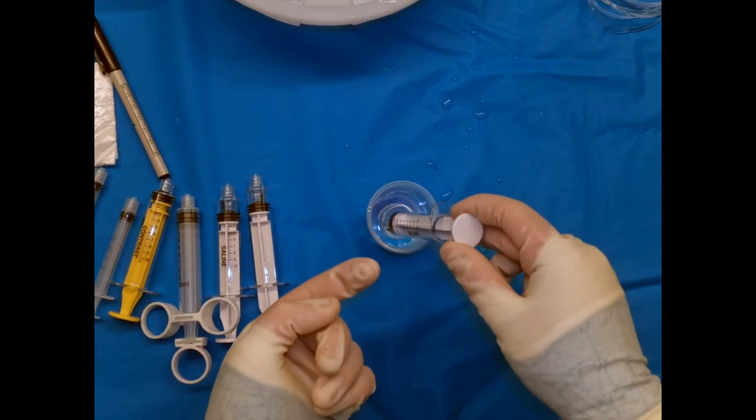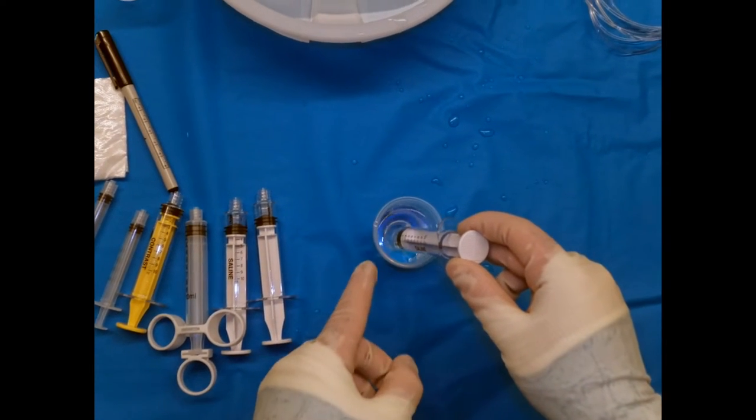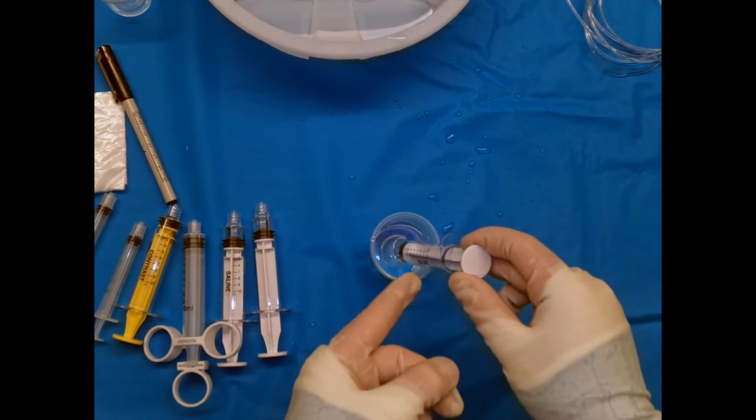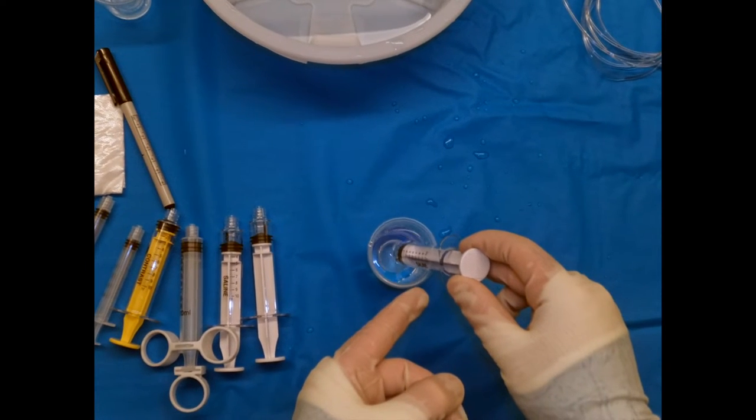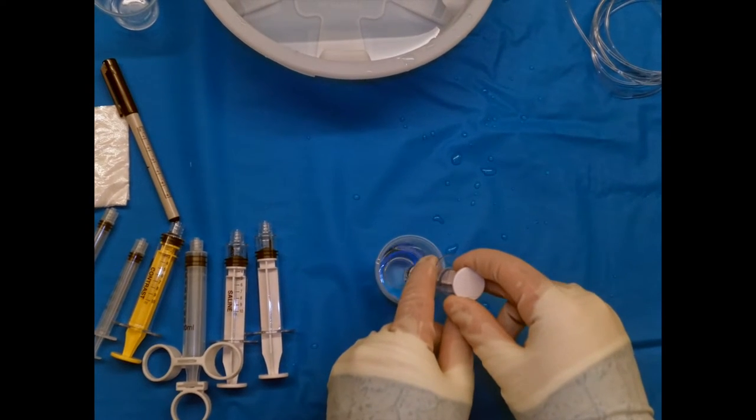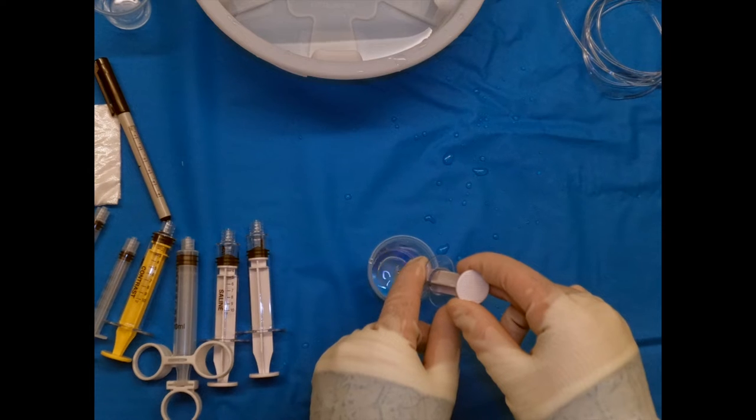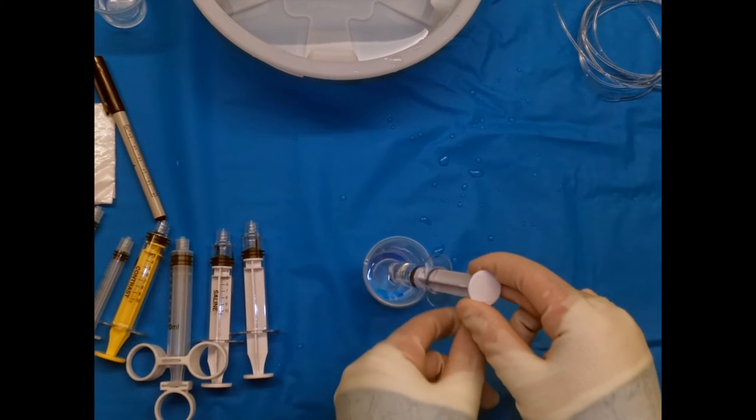You're going to keep the back of the plunger facing the ceiling so any air from the system will collect on the tip of the plunger, all in one place. So we're going to pull back, always keeping the syringe pointing up.